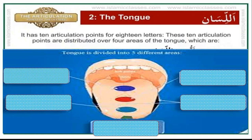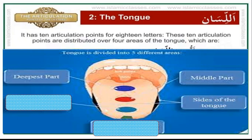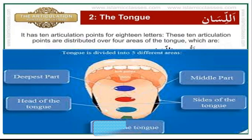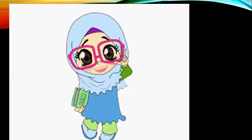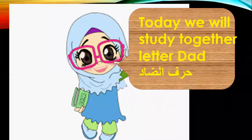The tongue has 10 articulation points for 18 letters. These 10 articulation points are distributed over four areas of the tongue: the deepest part of the tongue, the middle part of the tongue, the sides of the tongue, the head of the tongue, and the tip of the tongue. Today inshallah we will study together letter Dad — Harfu Dad.